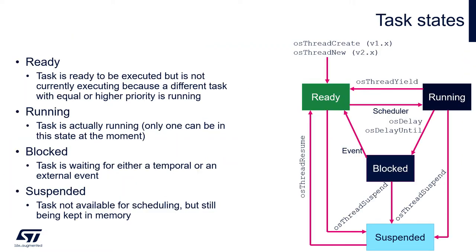A task can be present in one of four states. After its creation it is always in ready state — ready to be executed but not currently executing because a different task with equal or higher priority is running. The task can be selected by the scheduler to be running, changing its state to run state. It can come back to ready state once its time slice elapses, or it is preempted by a task with higher priority. The third state is blocked state — when the task is waiting for something, either a semaphore, mutex, data on a queue, or a delay. After those conditions are met, it is unblocked and returns to ready state.